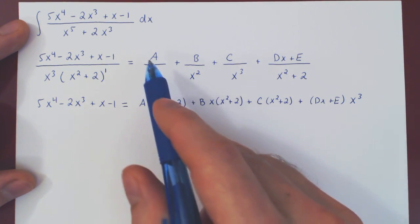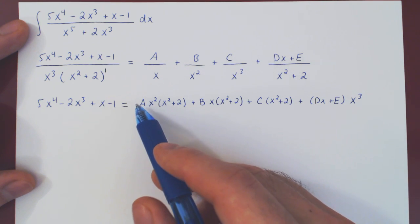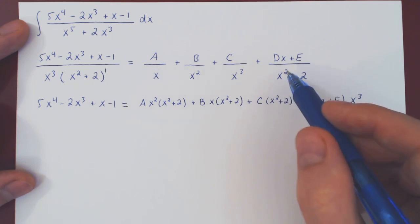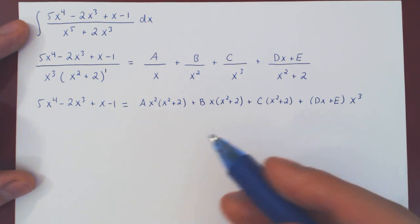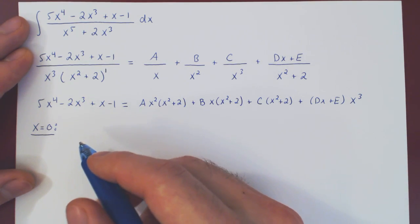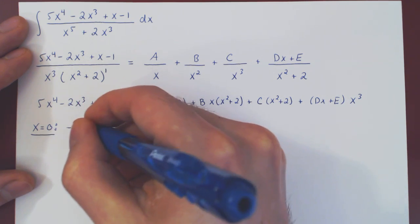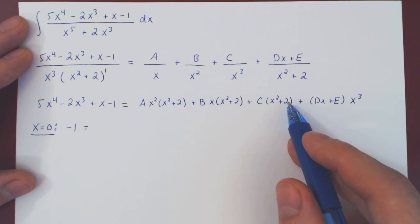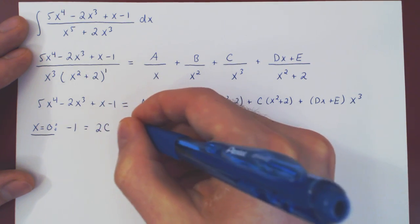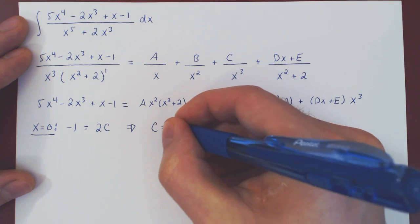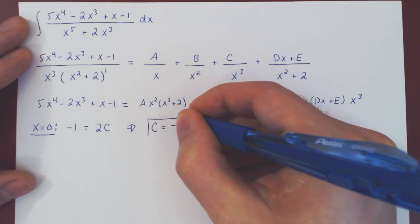We try using our first method by choosing a value of x that makes every coefficient zero but one. If you look here, the only value that will work is x equals 0, since x squared plus 2 is an irreducible quadratic and cannot be made zero with a real value. So we'll only obtain one coefficient this way, but we'll take it. Plugging in x equals 0, on the left you get negative 1. On the right, the first two and last terms vanish, leaving 2c equals negative 1, so c equals negative one half.